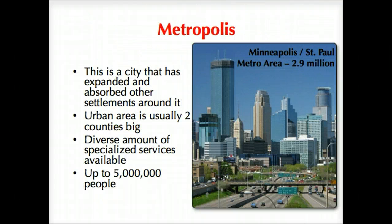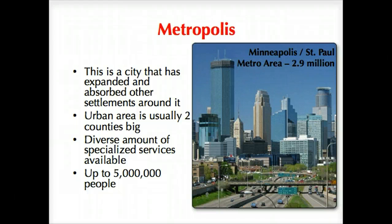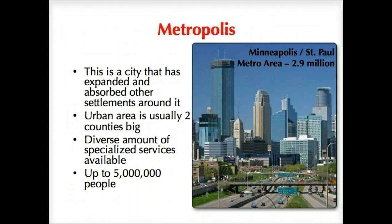Even bigger yet is the metropolis. The Minneapolis–Saint Paul metro area — the Twin Cities — is a perfect example because it highlights the fact that it absorbs surrounding settlements with no clearly defined boundaries. You have very defined industrial, commercial, and residential areas. There's a broad array of services provided, both low and high order — professional franchises, industrial areas, professional services like lawyers and doctors, and lots of gas stations, retail, and convenience stores. A metropolis can be up to five million people, and most metro areas in U.S. states would fall under this category.